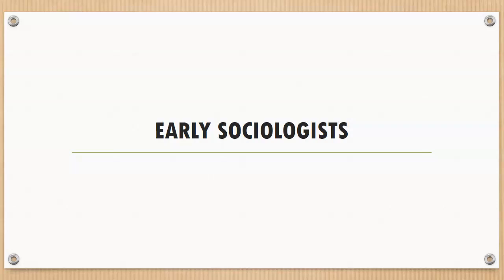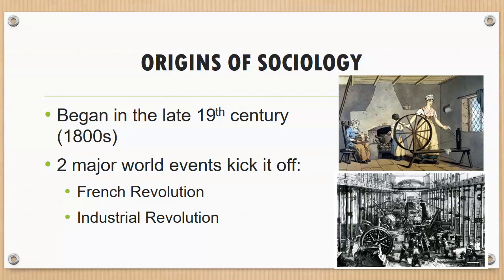Now that you know what sociology is, how did sociology come about? The study of sociology began in the late 19th century, so it's really only a little more than 100 years old. There were two major world events that really set the science of sociology ahead: the French Revolution and the Industrial Revolution, two things that happened in Europe. So sociology ultimately begins in Europe.